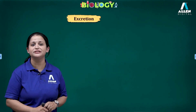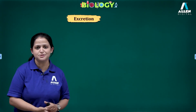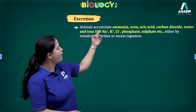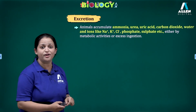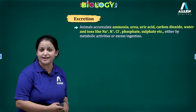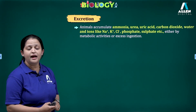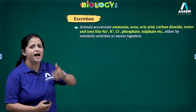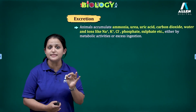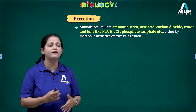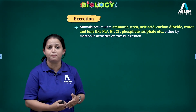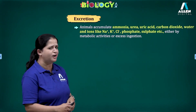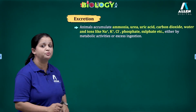Now, what exactly is the meaning of the term excretion? Before going to the term excretion, we need to know certain things. Animals mainly accumulate certain waste materials like ammonia, urea, uric acid, and carbon dioxide. Carbon dioxide is also considered as a metabolic waste material along with water. And certain ions which include sodium, potassium, chloride, phosphate, and sulphate — these ions in excess, if present in the body fluids, are considered as waste material. These metabolic waste materials are mainly produced because of metabolic activities or by excess ingestion.